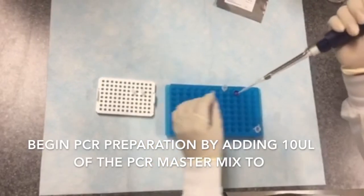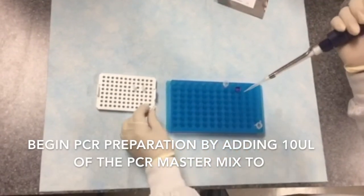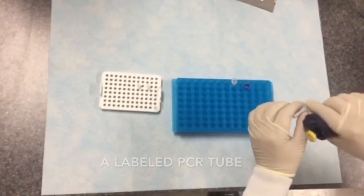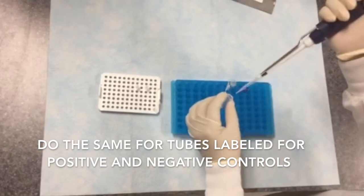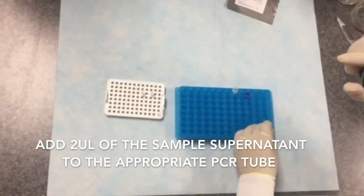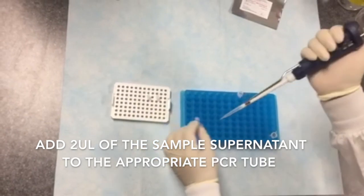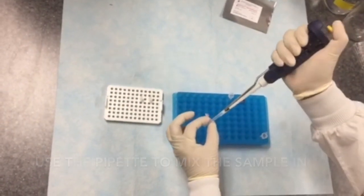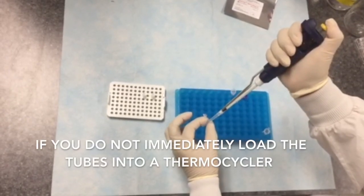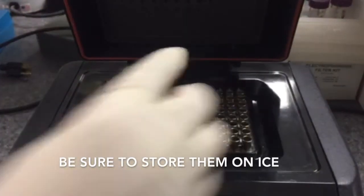Begin PCR preparation by adding 10 microliters of the PCR master mix to a labeled PCR tube. Do the same for tubes labeled for positive and negative controls. Add 2 microliters of the sample supernatant to the appropriate PCR tube. Use the pipette to mix the sample by pipetting up and down. If you do not immediately load the tubes into a thermocycler, be sure to store them on ice.